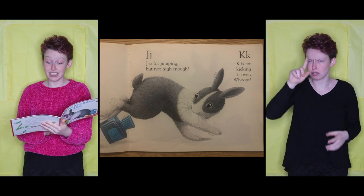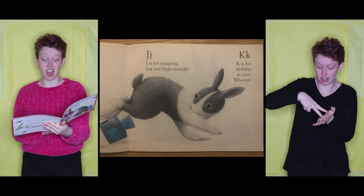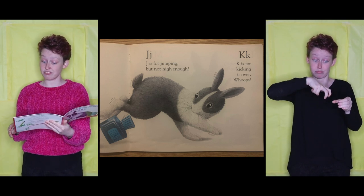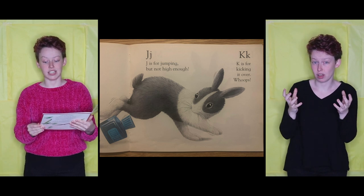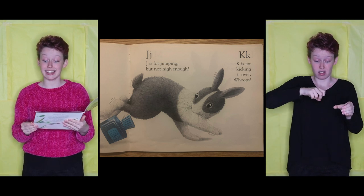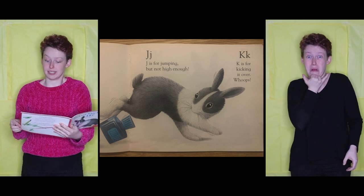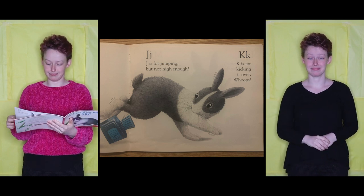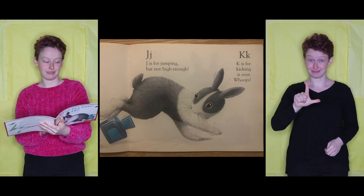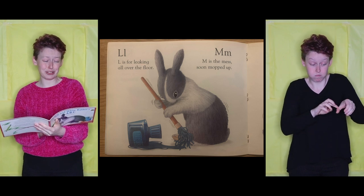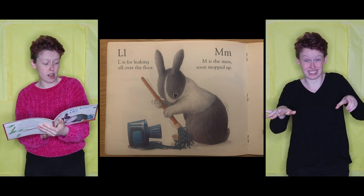J is for Jumping, but not high enough. K is for Kicking it over. Whoops! L is for Leaking all over the floor.